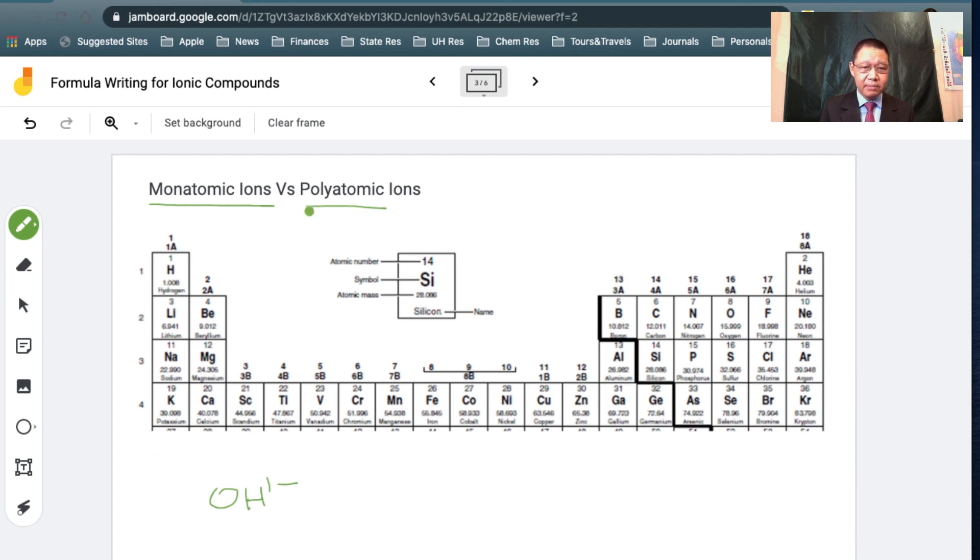Now, I'm going to be using the abbreviation PAI to refer to polyatomic ions. So anytime you see PAI, what I mean is polyatomic ion. There's a list of polyatomic ions that you're going to be provided that you can use for assessments. Eventually, you're going to have to memorize those if you're going to be moving on to higher chemistry.